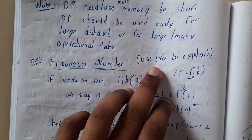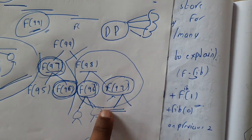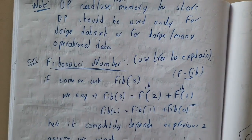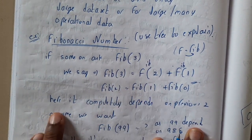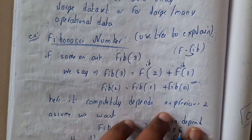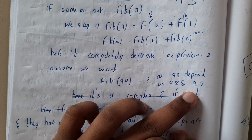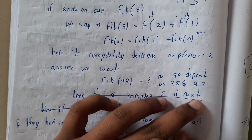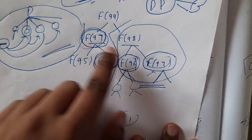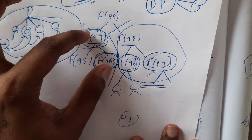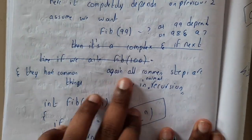Using a tree explanation for recursive problems: Fibonacci(3) depends on Fibonacci(2) and Fibonacci(1); Fibonacci(2) depends on Fibonacci(1). For Fibonacci(99), you need Fibonacci(98) and Fibonacci(97), each splitting further — and you get many repetitions. To avoid these repeated calculations, we store computed values: once you compute a value, you store it and reuse it directly.